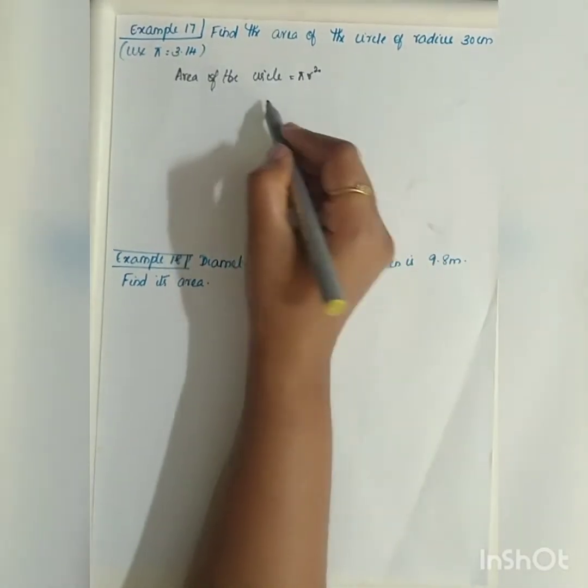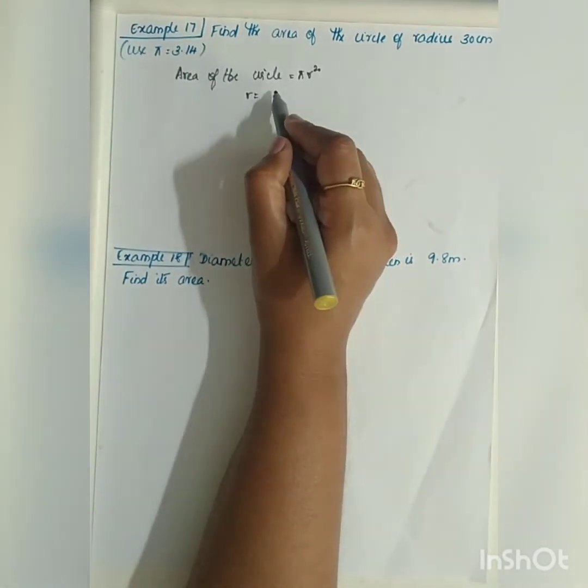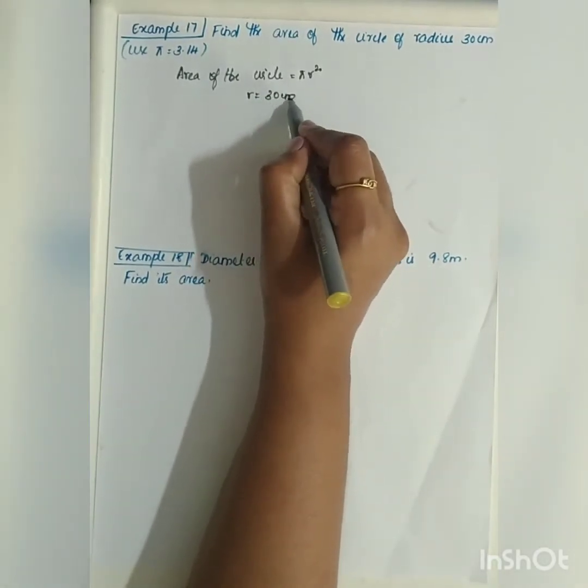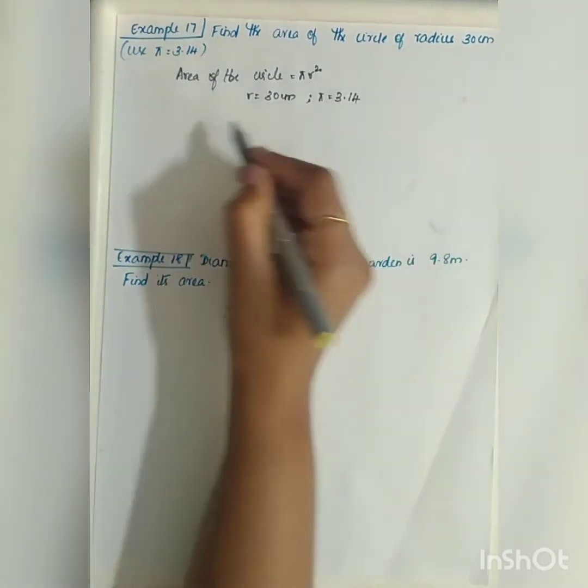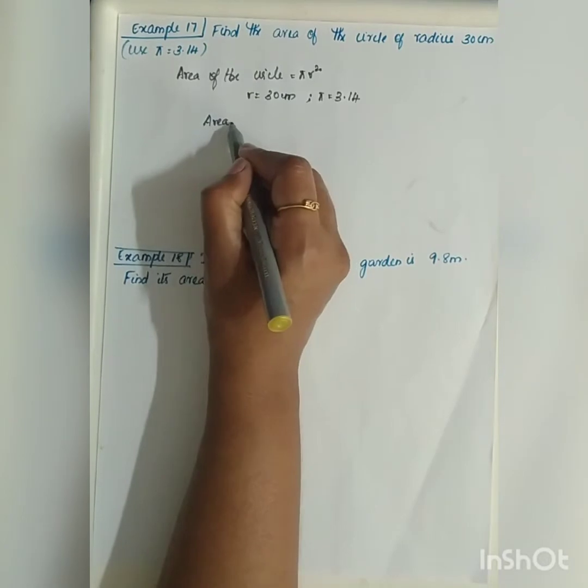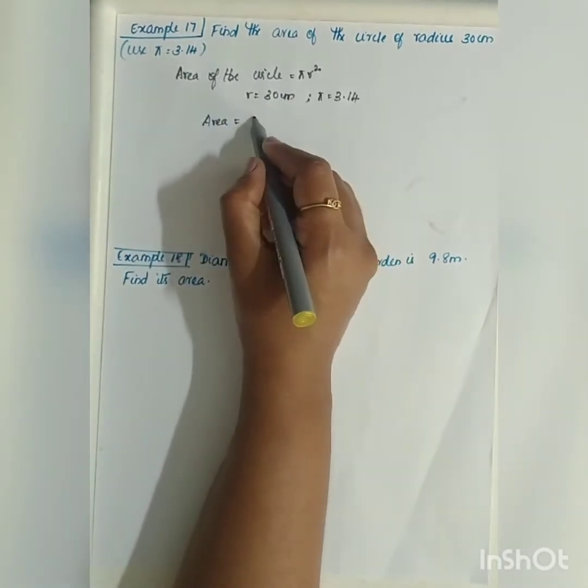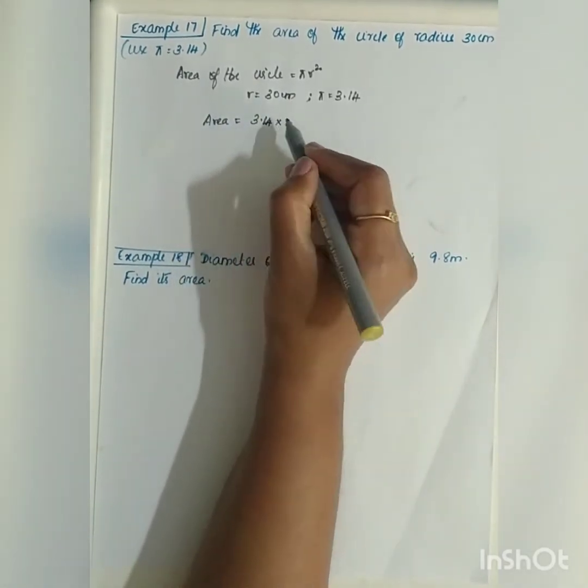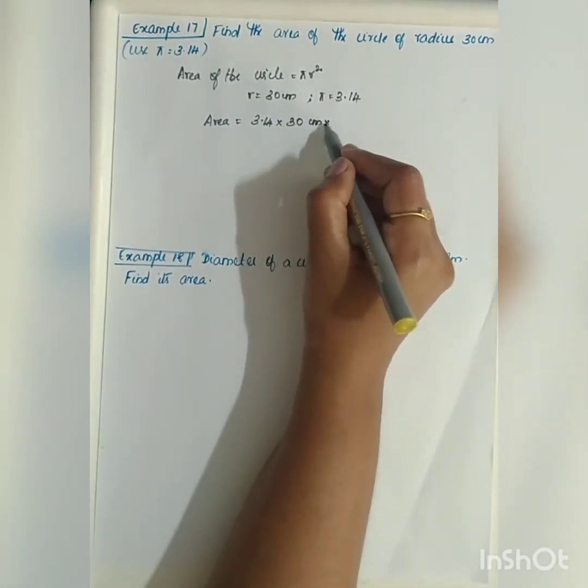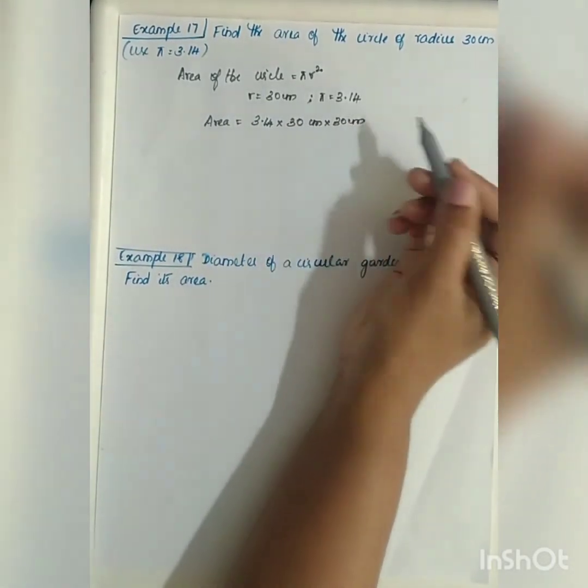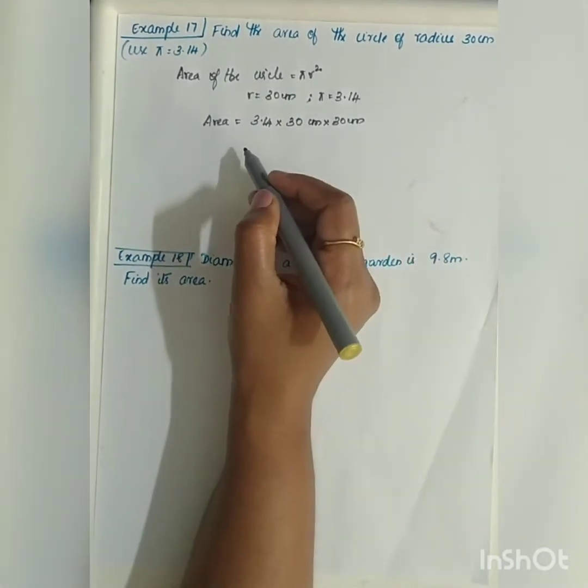What is given? Radius is given, right? Small r is equal to 30 centimeter and we have to use pi is equal to 3.14. If we substitute the values, area is equal to 3.14 into 30 centimeter into 30 centimeter because it is r square.